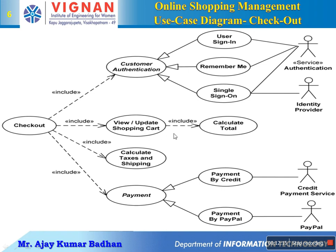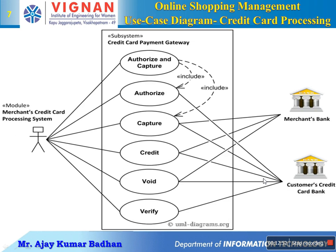Next comes view or update shopping cart — when you're checking out you might be updating the cart and viewing the total. It also includes calculate taxes, so when billing is done you are shown different taxes and shipping charges. Coming to payment, there are two options: payment by credit card and payment by PayPal. The credit card payment service handles credit card transactions, and PayPal is like an app — similar to how we use PhonePe or Google Pay today.